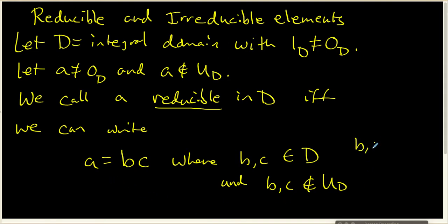And since a is not 0, we also know that b and c are not going to be 0. In other words, we can write a as a product of two non-units. So a is a product of two non-zero non-units.